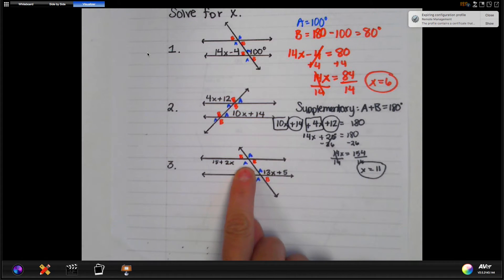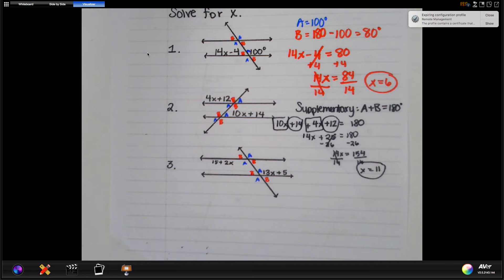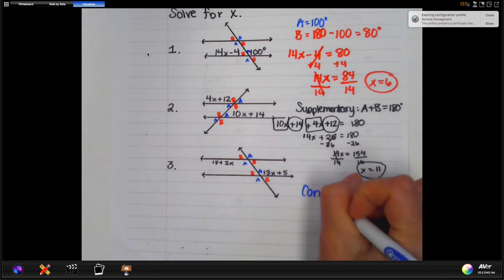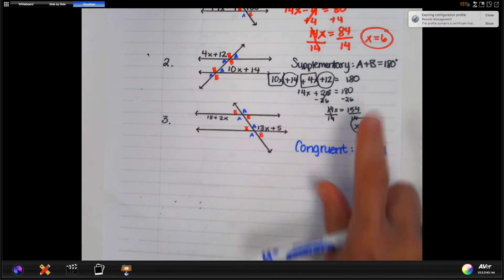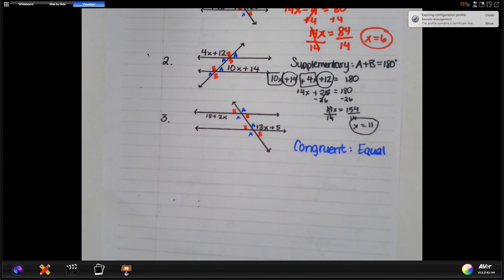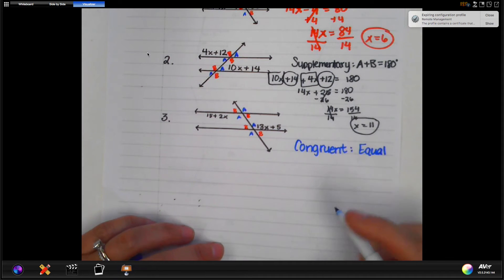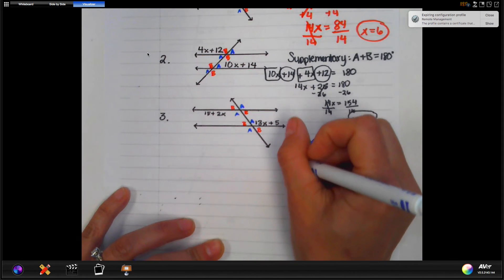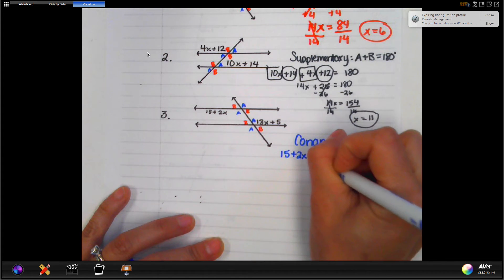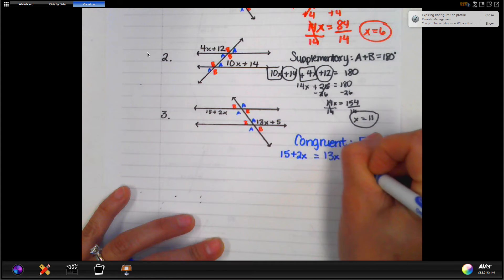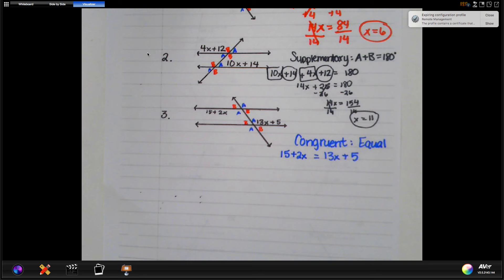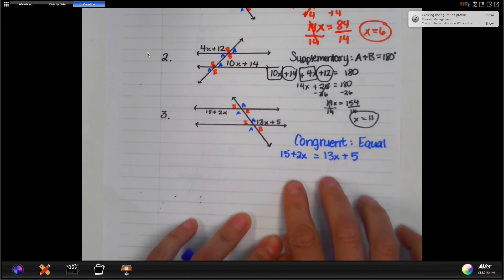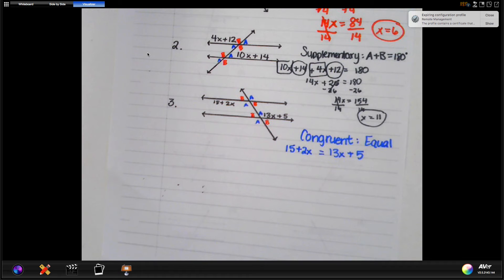15 plus 2X is on an A, and 13X plus 5 is also on an A. That means that these two are congruent. So congruent means that they are equal. So that doesn't mean they add to 180. It means that they are equal. So what we're going to do when we write our equation out is we are going to set them equal to each other. So when I write it, 15 plus 2X is going to be equal to 13X plus 5. Now, this looks like something that we've done way in the beginning of the year, and that is to have an equation on both sides. So when we have an X on both sides of the equation, we want to cancel one of them out.